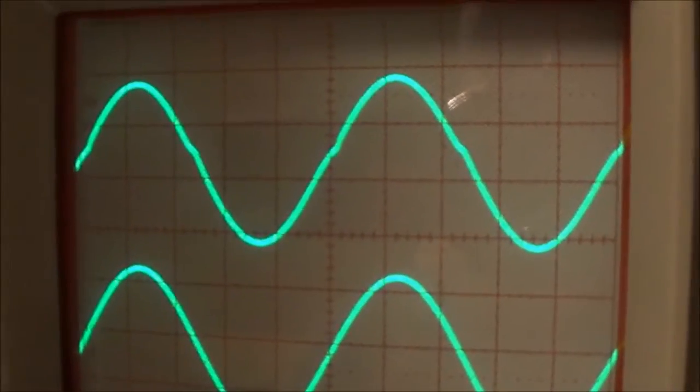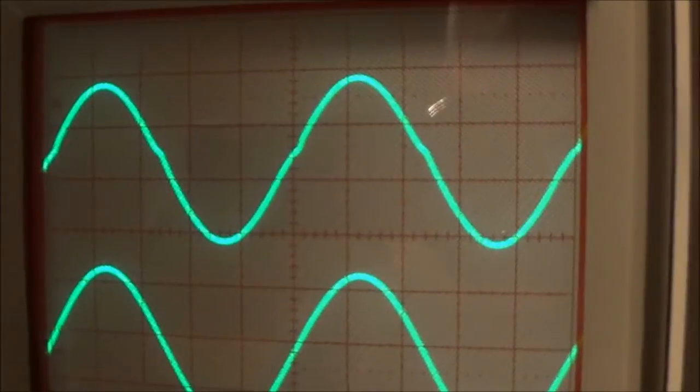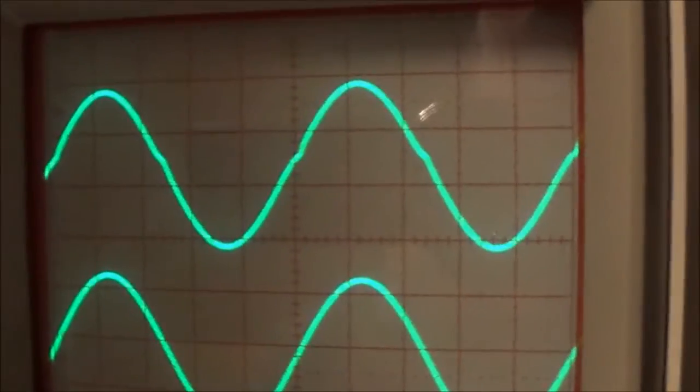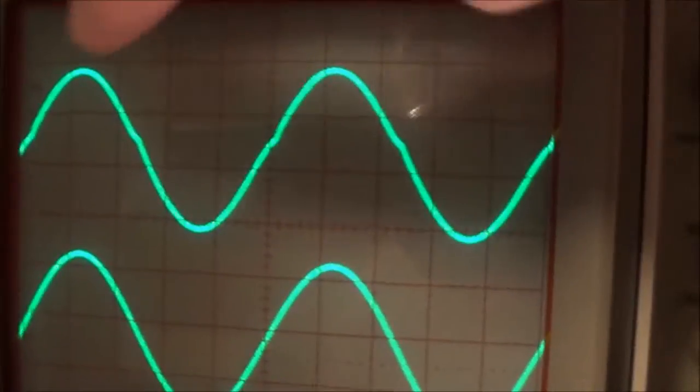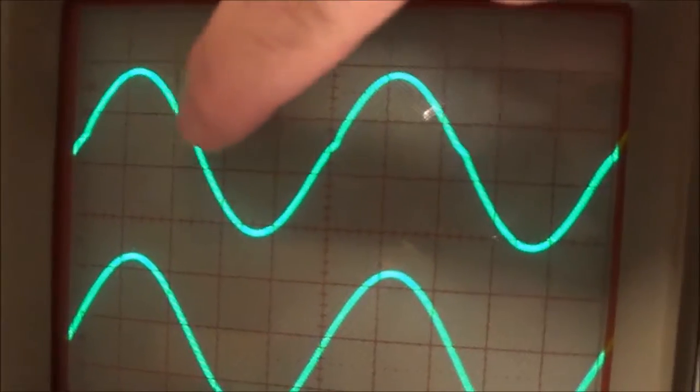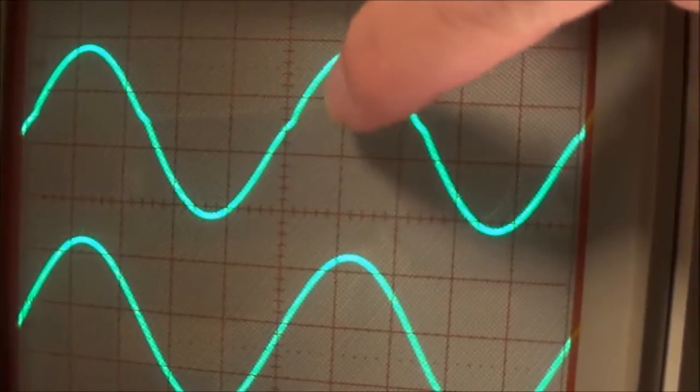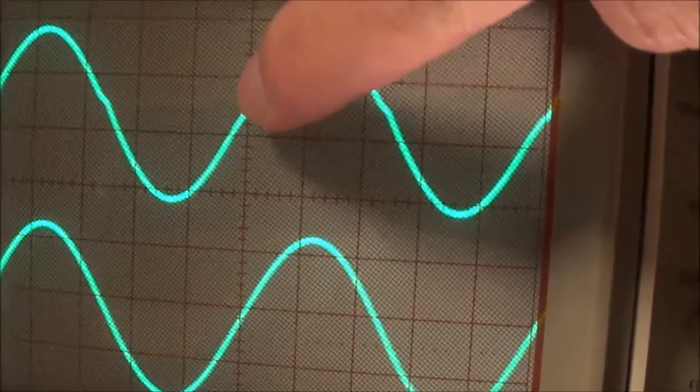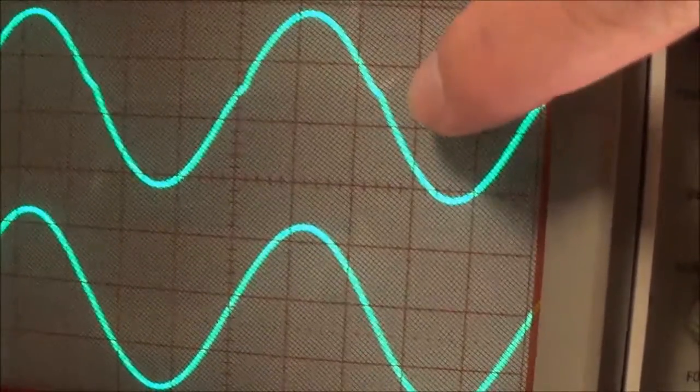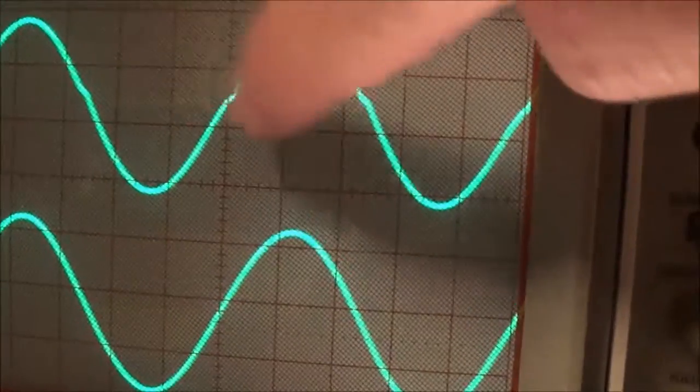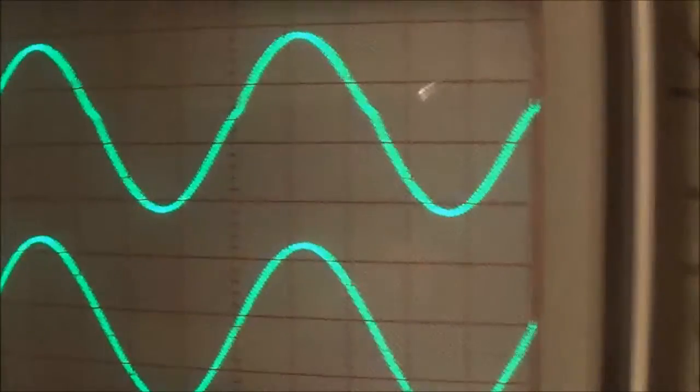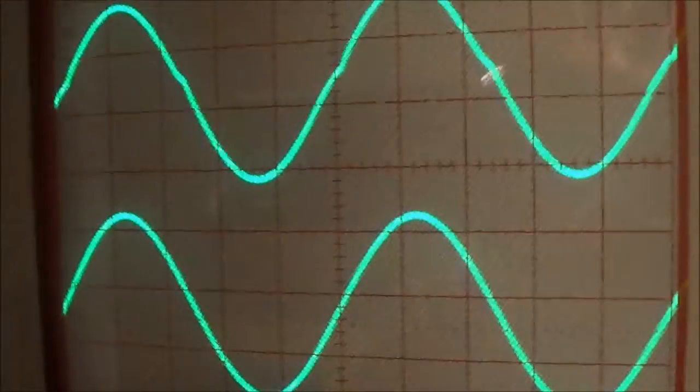And just for the hell of it, I decided to minimize the idling current on the left channel. And you can see right here what happens, there's like a little wrinkle here where the positive side of the wave meets the negative side. There's a little wrinkle right here, right there, right there. And that would be crossover distortion.